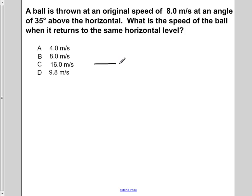So if we draw here, this is the ground level. If we throw the ball up an angle of 35 degrees and it follows a projectile motion, it's going to land back down here.